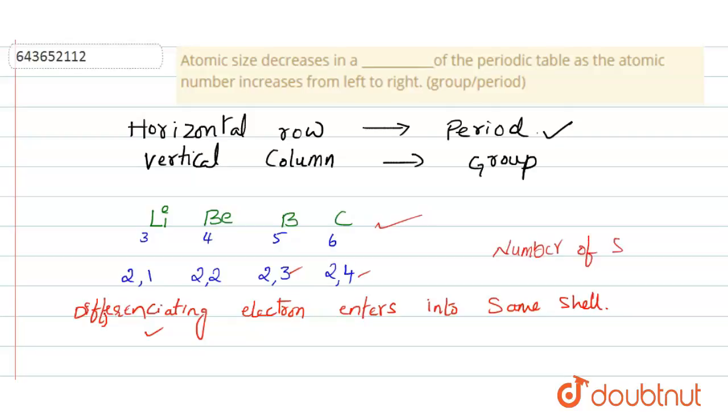Number of shells are same. So if number of shells are same there is decrease in the atomic size. So how the atomic size decreases even though the number of shells are same?